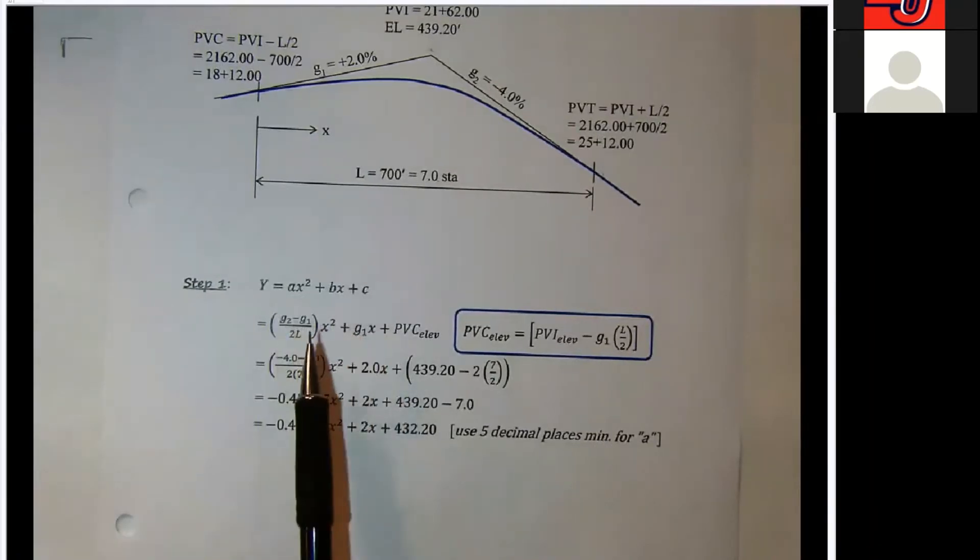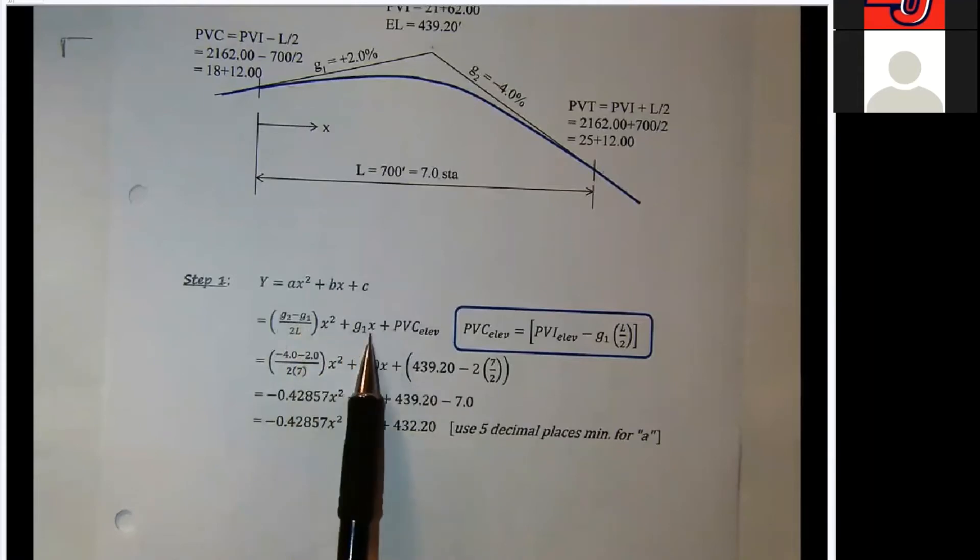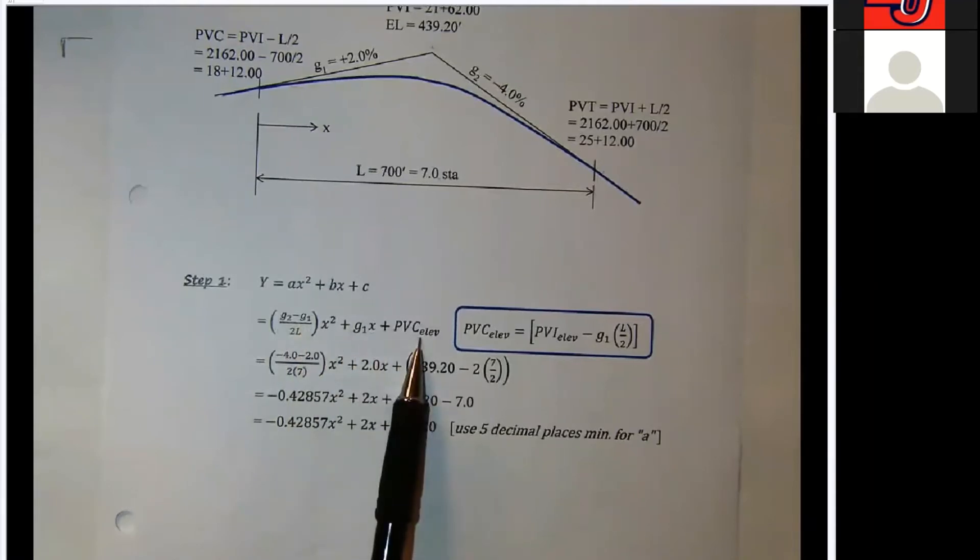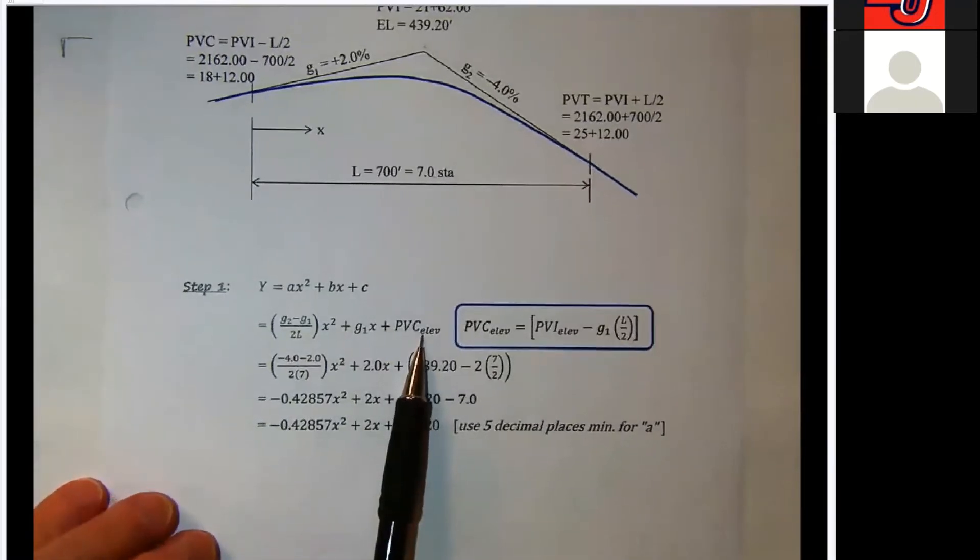So you might jump down and start here at line number two, and try to fill in things as you go along. The generic formula: G2 minus G1 over 2L times X squared plus the G1X plus the PVC elevation, and I've already said that several times.